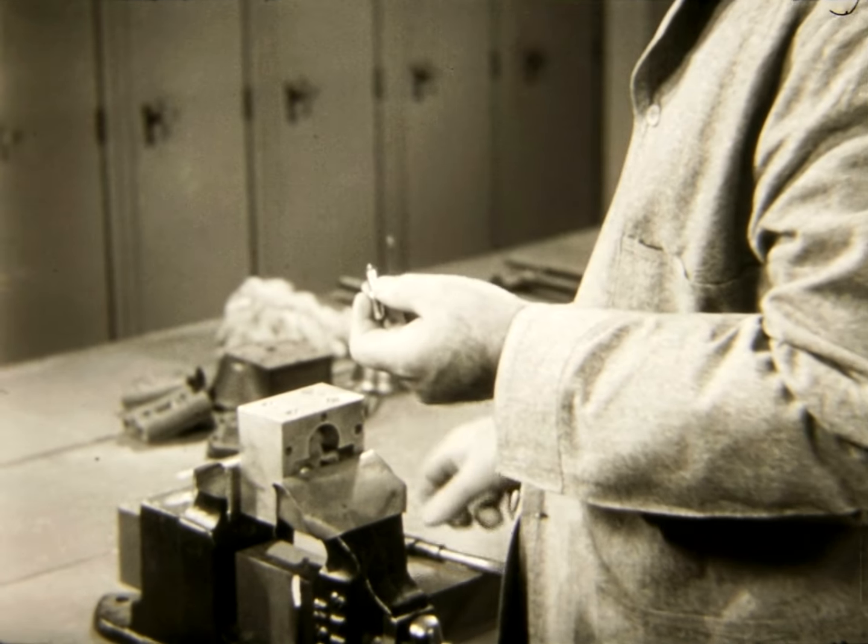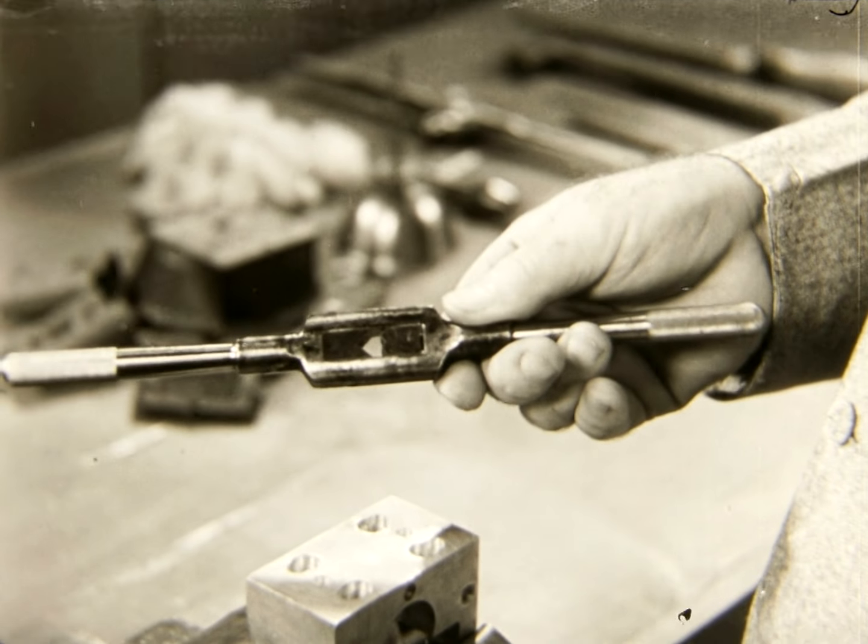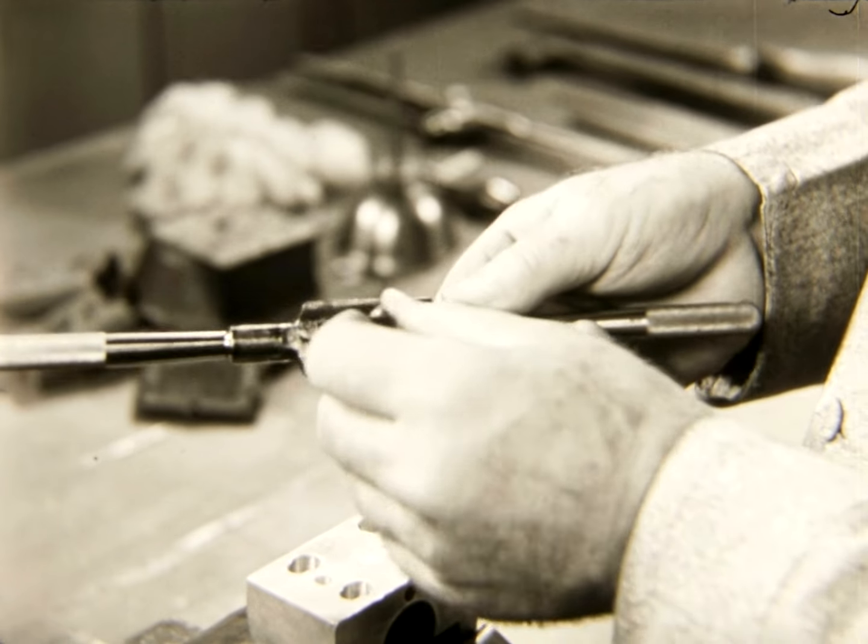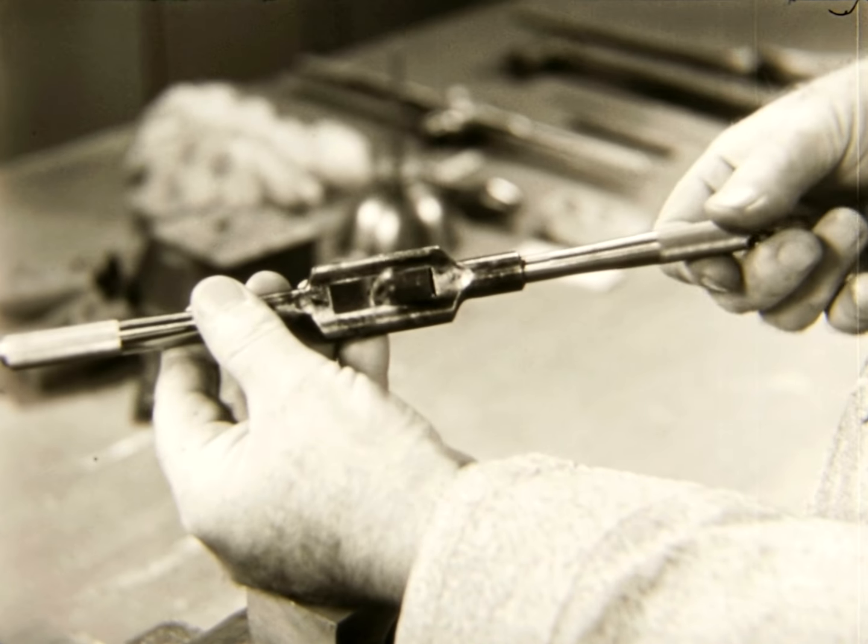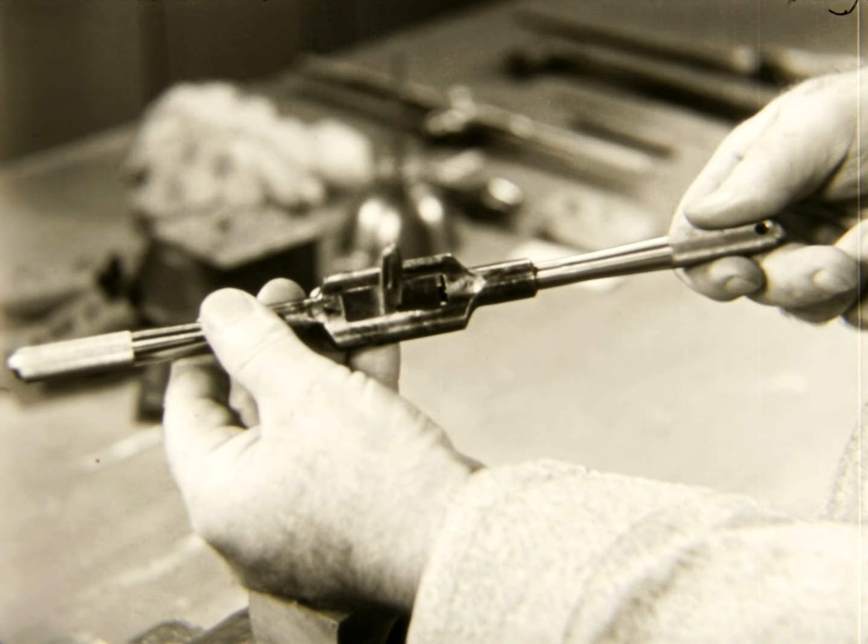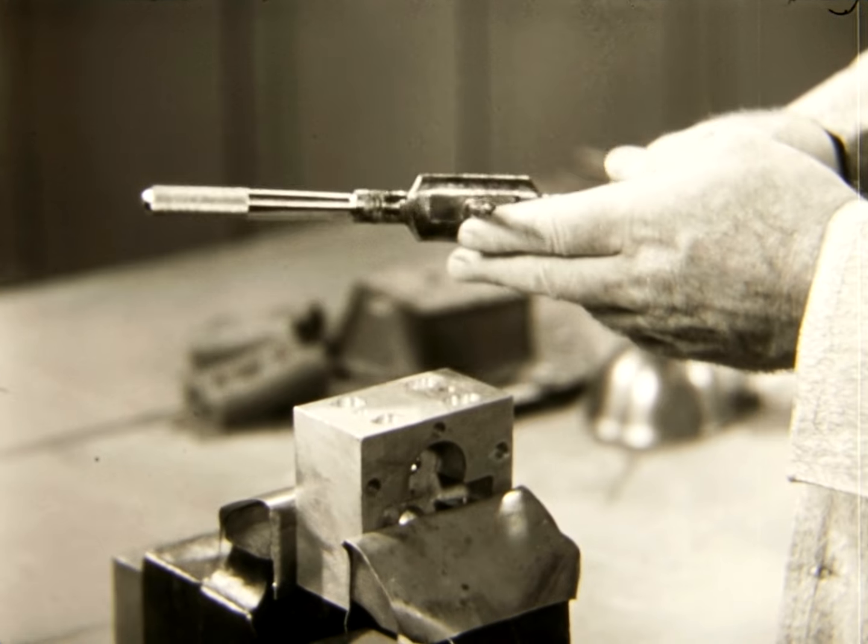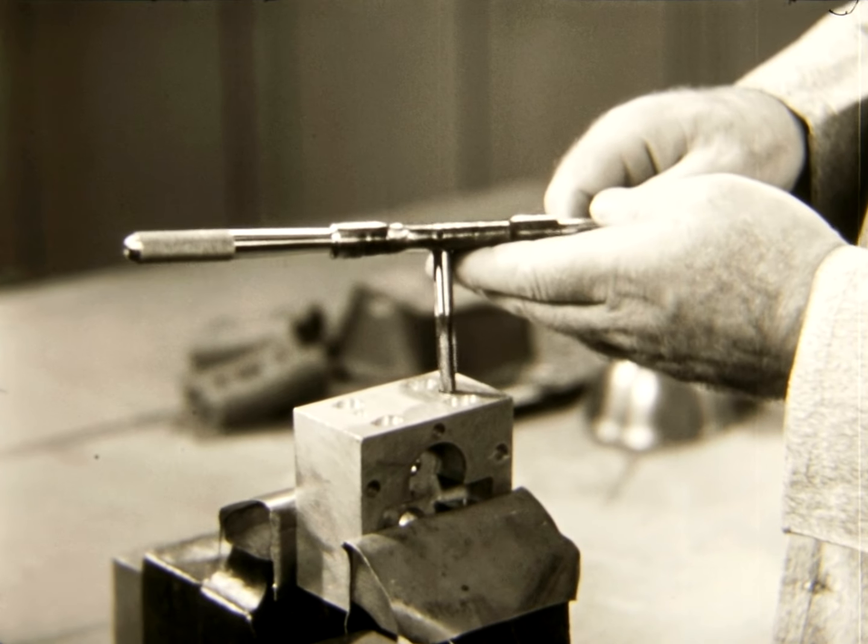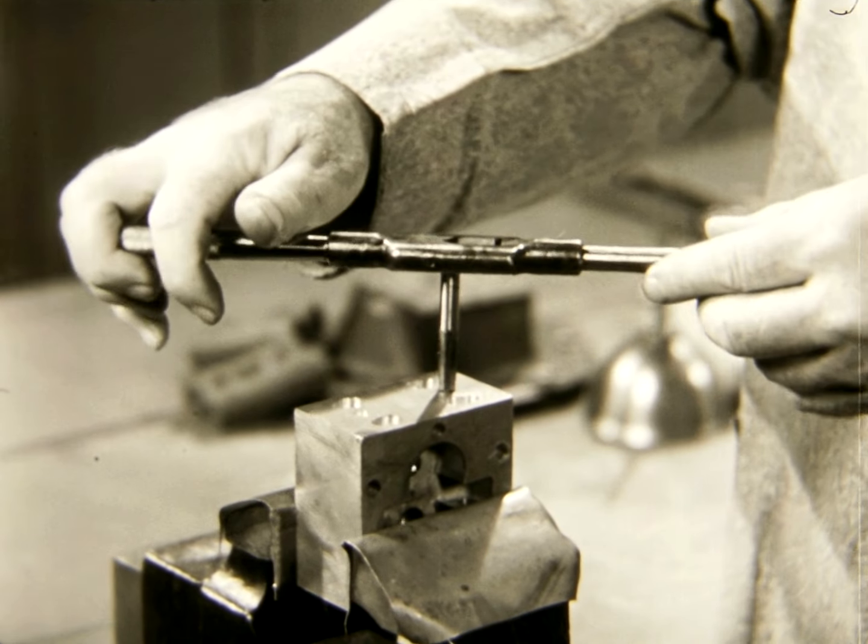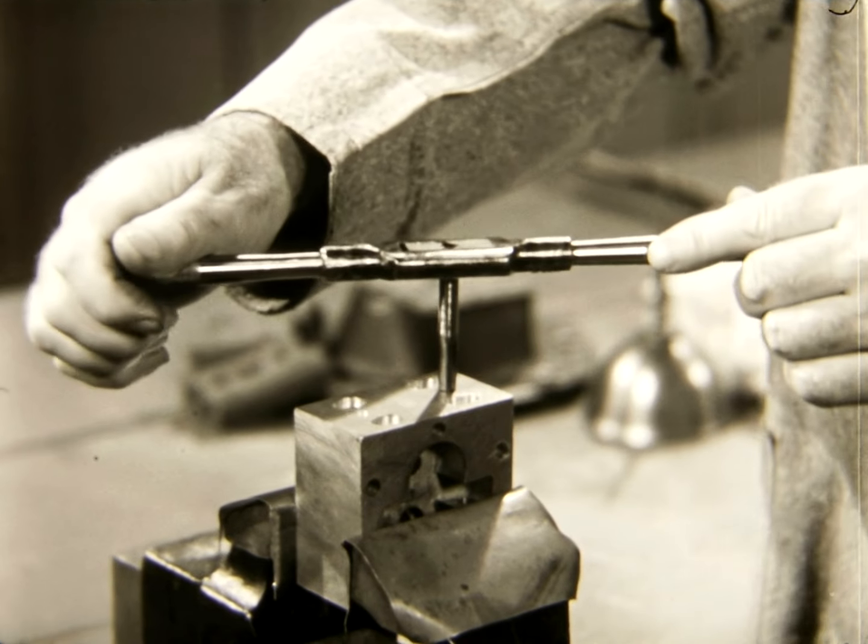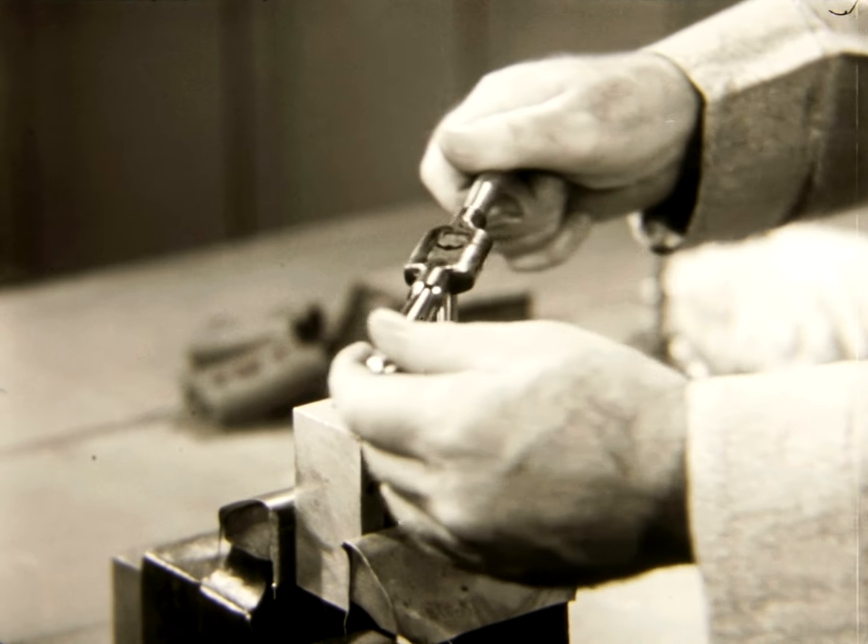Taps must be sharp to cut a full thread easily and without breaking. An adjustable double end wrench is used to hold and turn the tap. The square head of the tap must match the square formed by the wrench jaws. The taper tap is inserted straight in the hole. After a thread catches, one full turn is made.